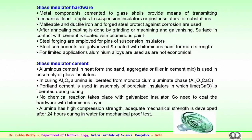The metal hardware used with the glass shells is similar to that of the ceramic insulators — the end fittings, Portland cement, and so on for porcelain insulators. Metal components are cemented to the glass shells to provide a means of transmitting mechanical load for suspension, post, or substation equipment insulators. Usually malleable and ductile iron and forged steel, protected against corrosion, are used for the pin and cap hardware, with casting done by grinding, machining, and galvanizing.